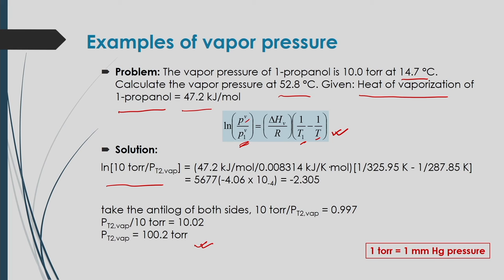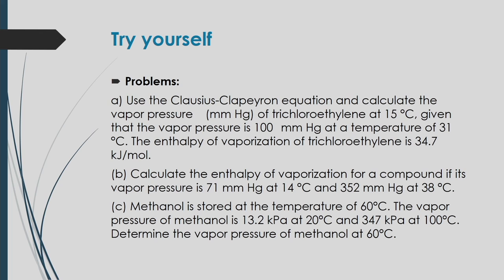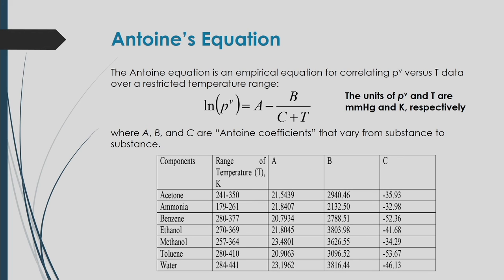You can also practice additional exercise problems using the Clausius-Clapeyron equation to find vapor pressure. Another important equation for calculating vapor pressure is Antoine's equation — an empirical equation correlating vapor pressure with temperature over a restricted temperature range.